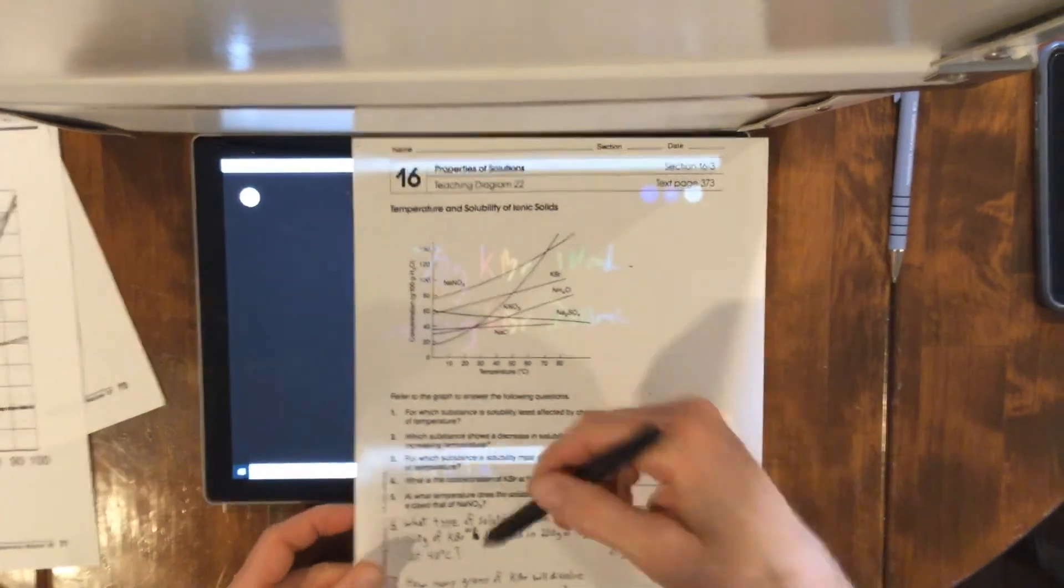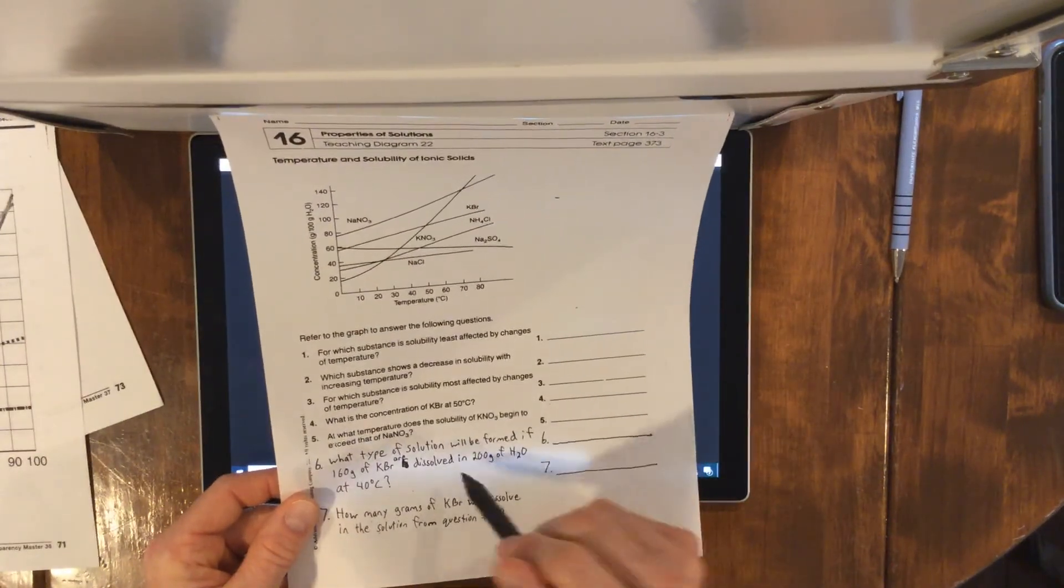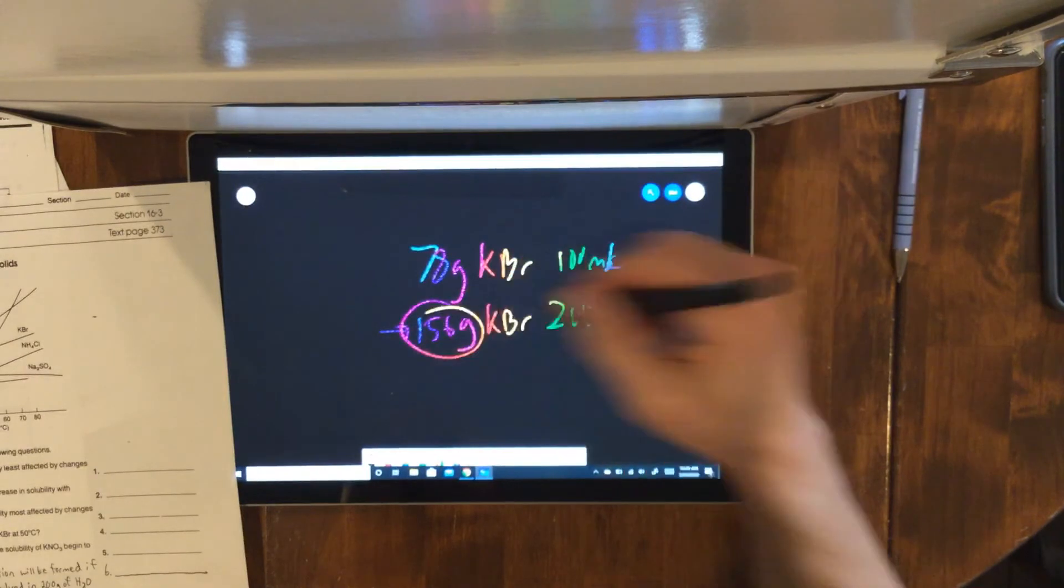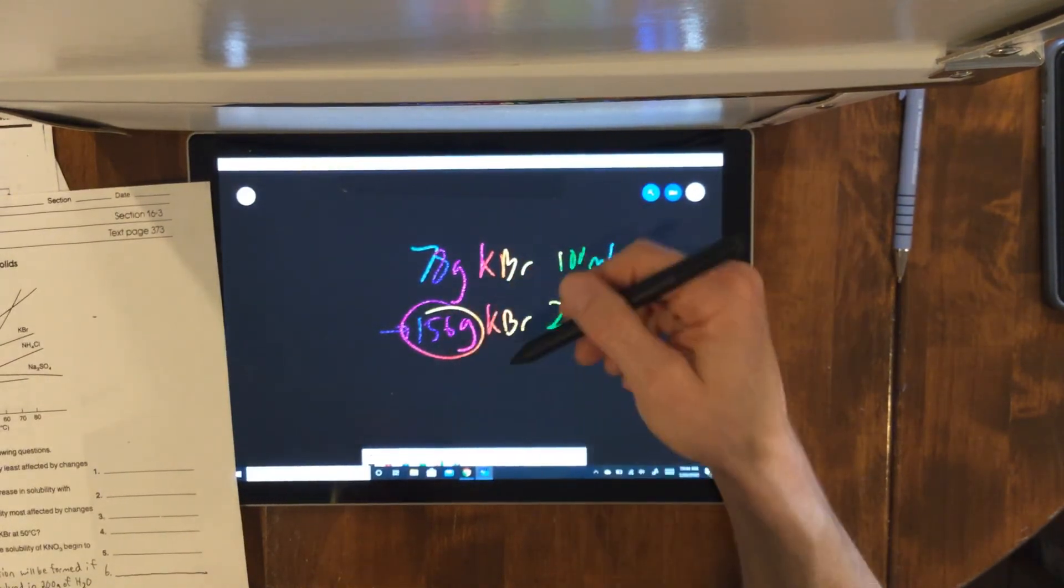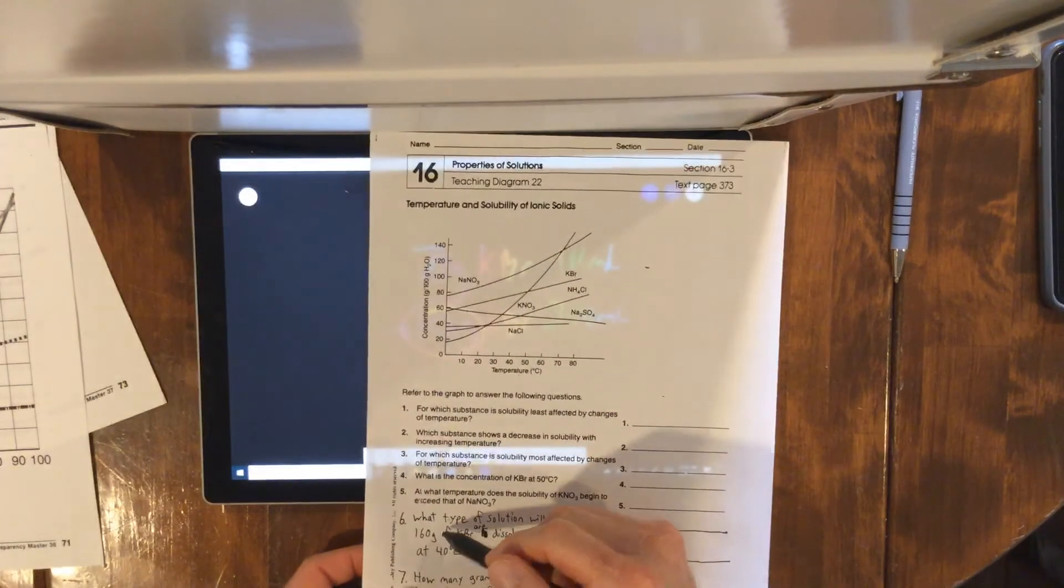How many grams of KBr will dissolve in solution from question six? 156 grams will dissolve, four grams of precipitate, because you're adding 160. Based on the numbers you can only have 156 dissolve.